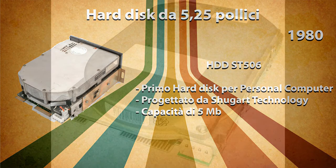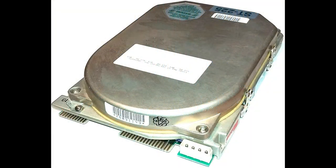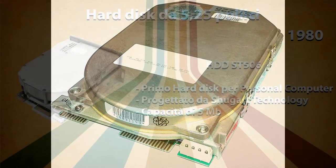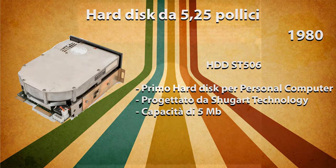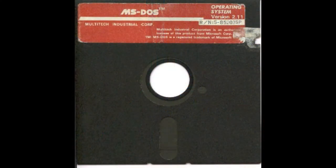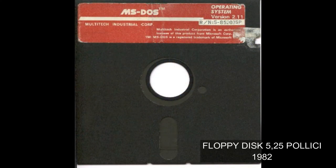Poco dopo è stato introdotto l'ST-225 che aveva 20 MB come spazio di archiviazione e come altezza era la metà. Agli inizi degli anni 80, visti i costi ancora alti dei primi hard disk da 5,25 pollici, alcuni PC di nuova uscita non avevano un hard disk all'interno, ma caricavano il sistema operativo e i programmi tramite floppy disk, intercambiandoli all'occorrenza.